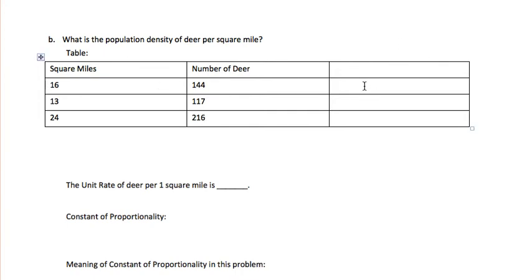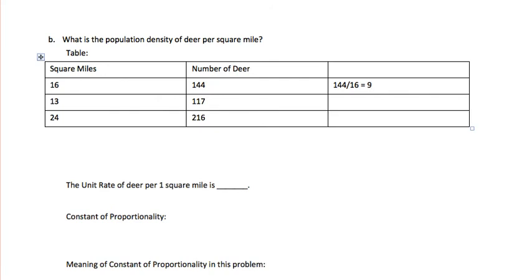Then we go to our calculation column to find how many deer per square mile. Since our unit is the square mile, we always divide the other number by our unit to find the unit rate. So we divide 144 deer by 16 square miles, and we find that to be 9 deer per square mile.